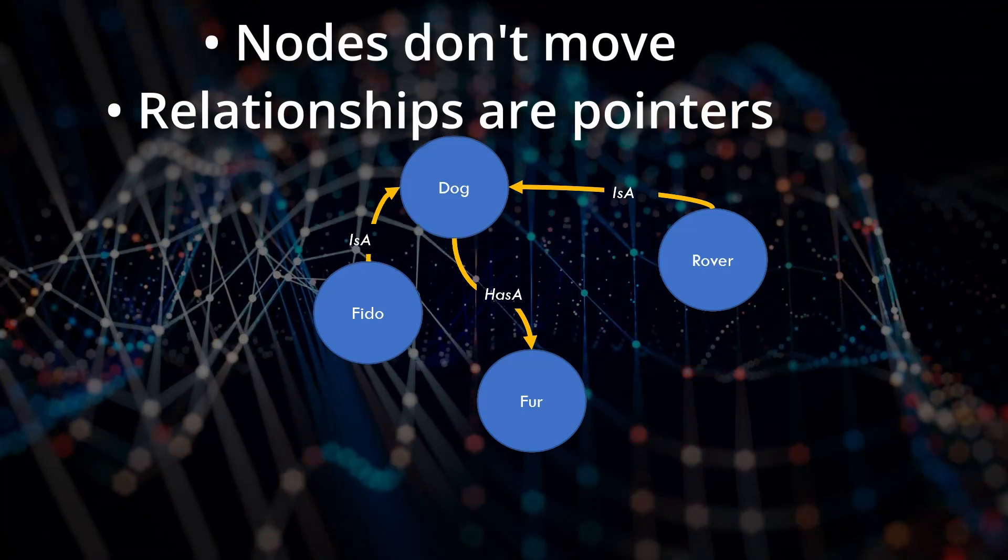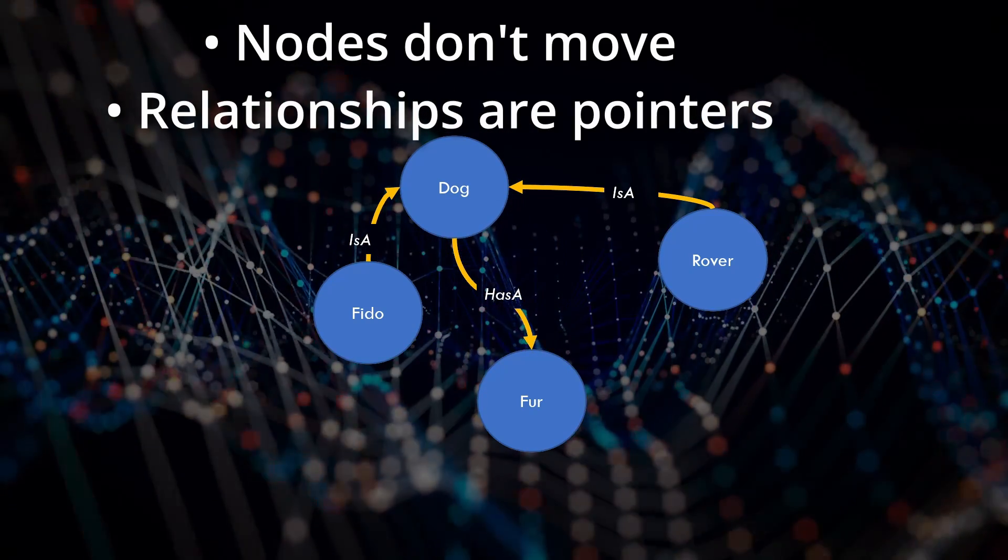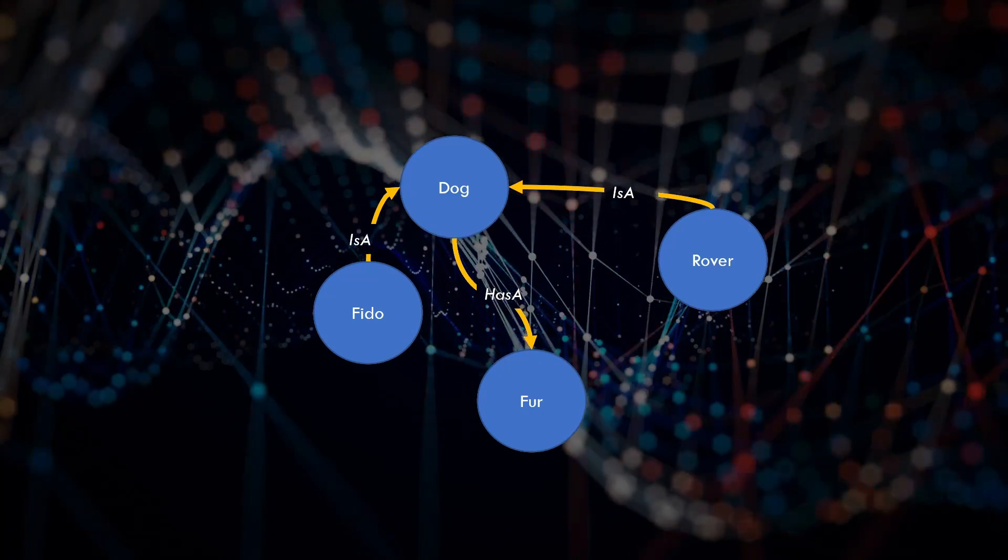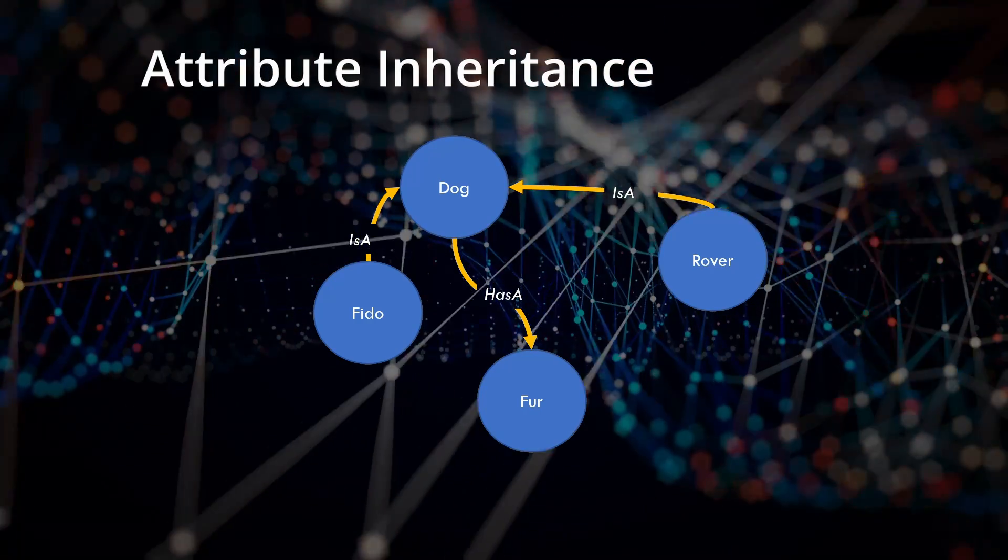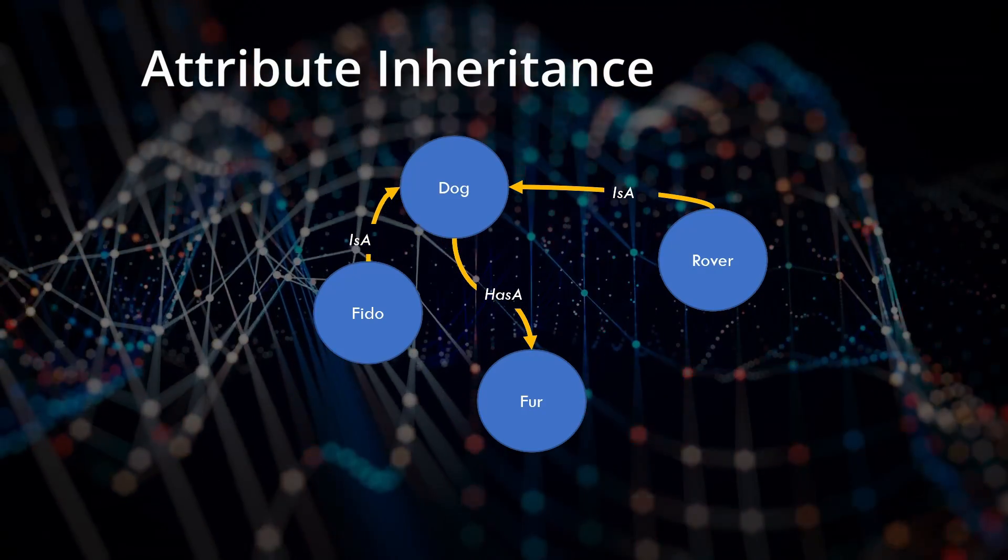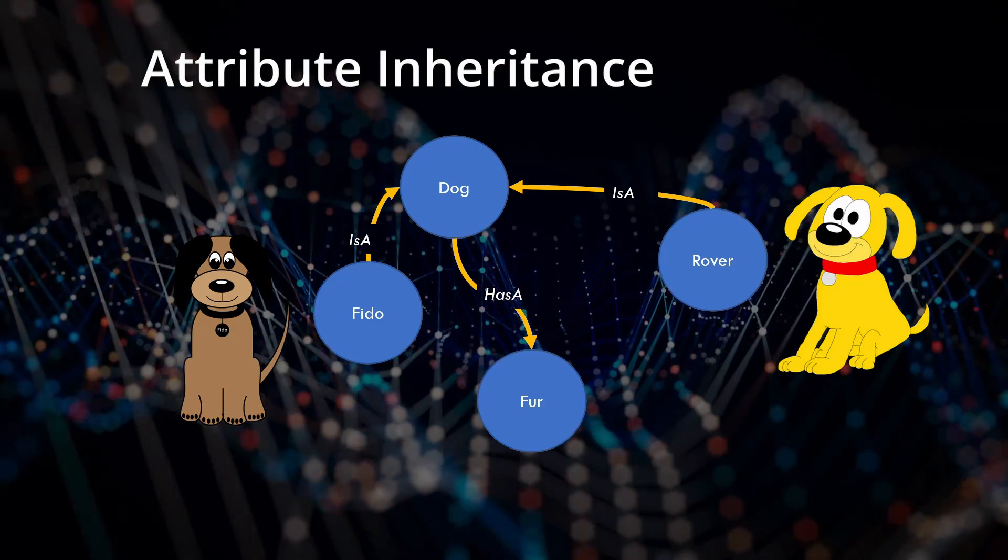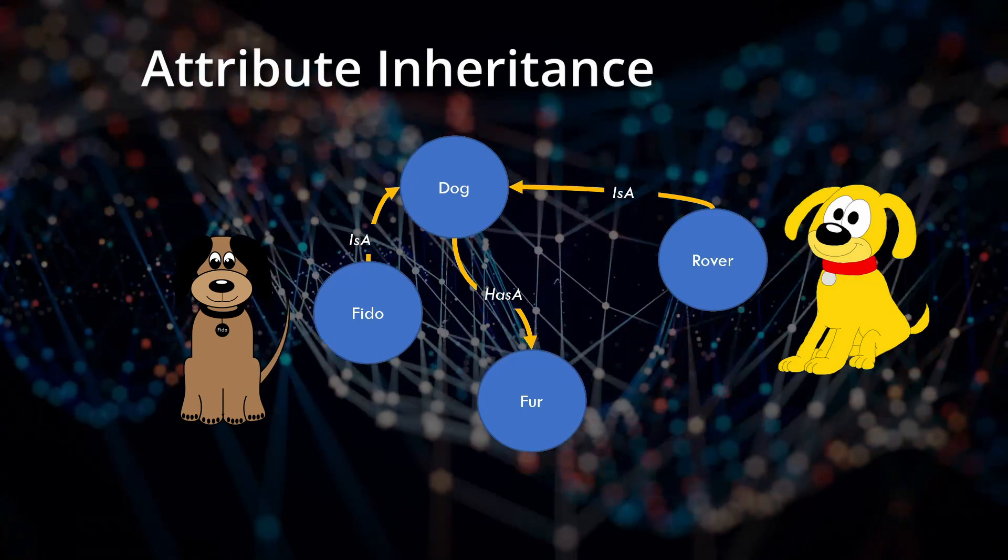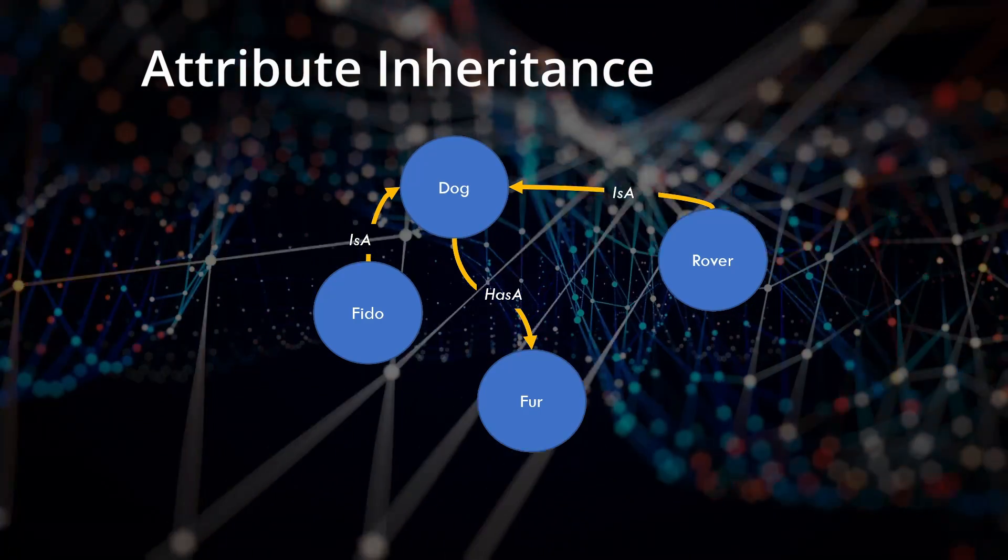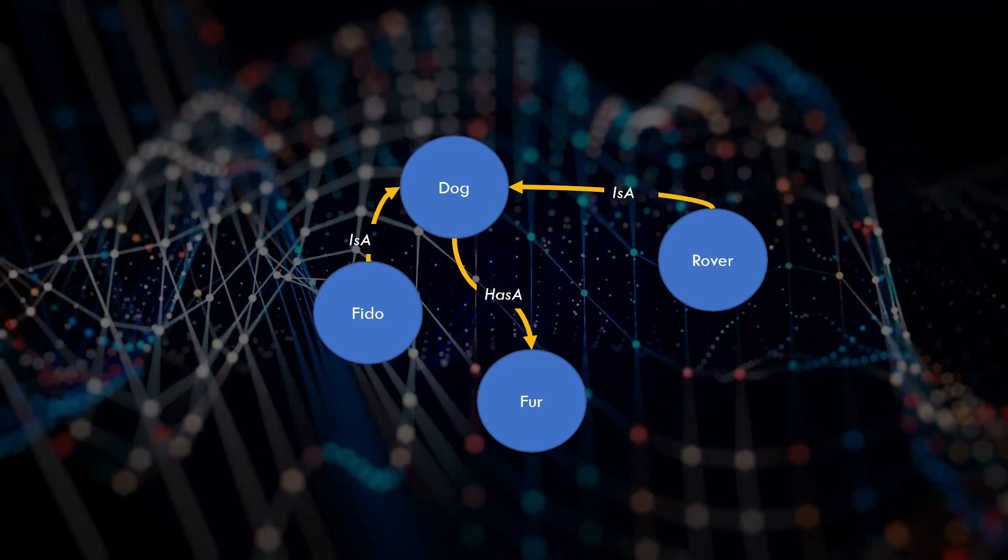When you move relationships around in the graph like this, no data moves. In code, the target of a relationship changes - that is, the value of a single pointer in RAM is changed. The whole concept of attribute inheritance is an immensely powerful knowledge compression mechanism. We get a huge advantage from this simple example: first, we don't just know that Fido has fur, but we also know that Rover has fur even though that information has never explicitly been given. And this advantage continues to pay dividends. Keeping in mind that the dog node may have many attributes, think about it: if I tell you that Max is a dog, you can immediately form a mental image of Max with a significant number of attributes.